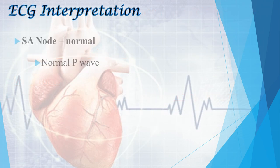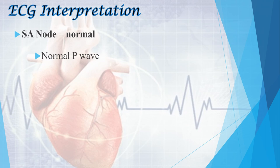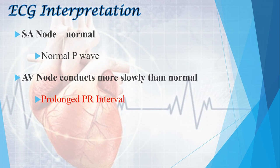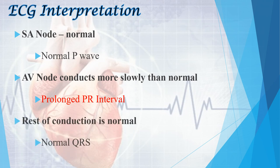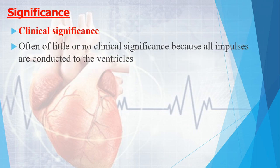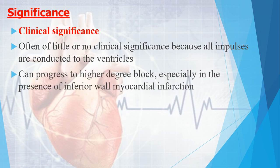ECG interpretation: the SA node is normal, showing a normal P wave. The AV node conducts more slowly than normal, producing a prolonged PR interval — that is the significant feature of first degree heart block. The rest of conduction is normal, so the QRS complex is also normal. Clinically, first degree heart block is often of little or no significance because all impulses are still conducted to the ventricles, but it can progress to a higher degree block, especially with inferior wall myocardial infarction.